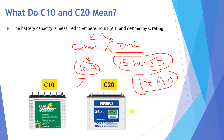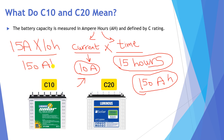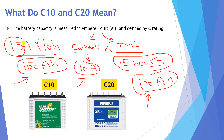10 multiplied by 15 equals 150 ampere-hours, which is the capacity of the battery. Another example: if the current is 15 amperes, we multiply by 10 hours to get 150Ah. So we can have two identical 150Ah batteries, but one supplies 15 amperes and the other supplies 10 amperes — one for 10 hours and one for 15 hours.